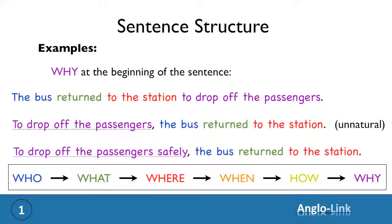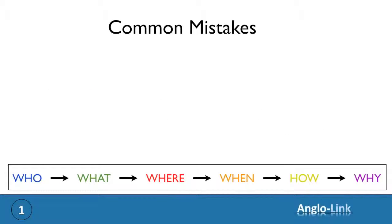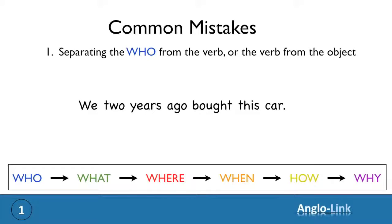Right, it's time now to look at some common mistakes. The first common mistake is separating the who from the verb, or the verb from the object. Let's look at an example. You hear, we two years ago bought this car. Let's colour the elements. And you notice immediately that the element when is in the wrong place. It has separated the who from the what. You must avoid this. So let's put it in the right place. We bought this car two years ago.